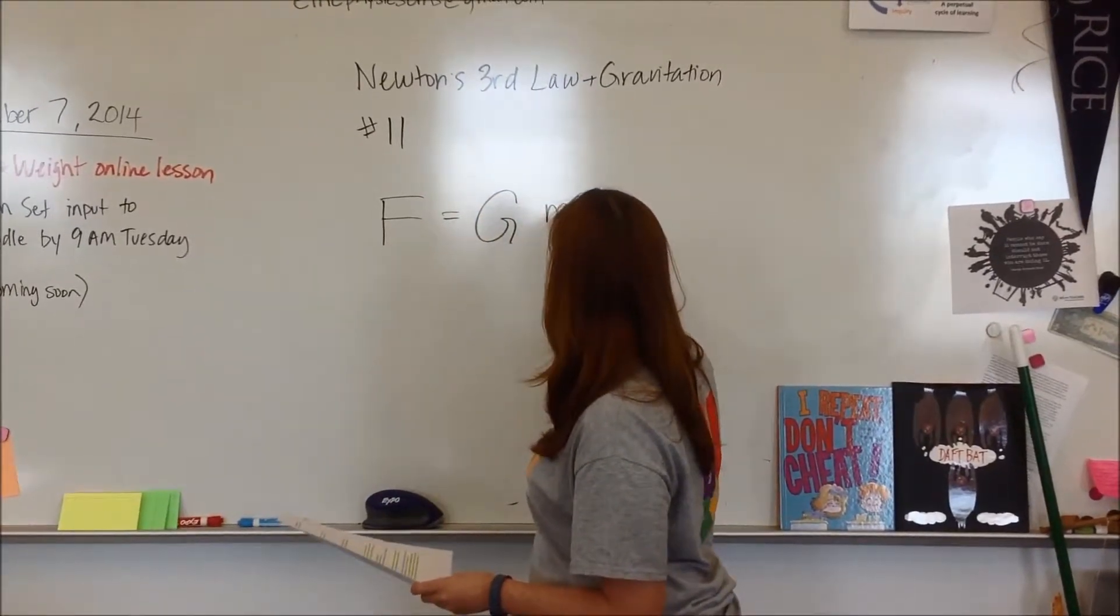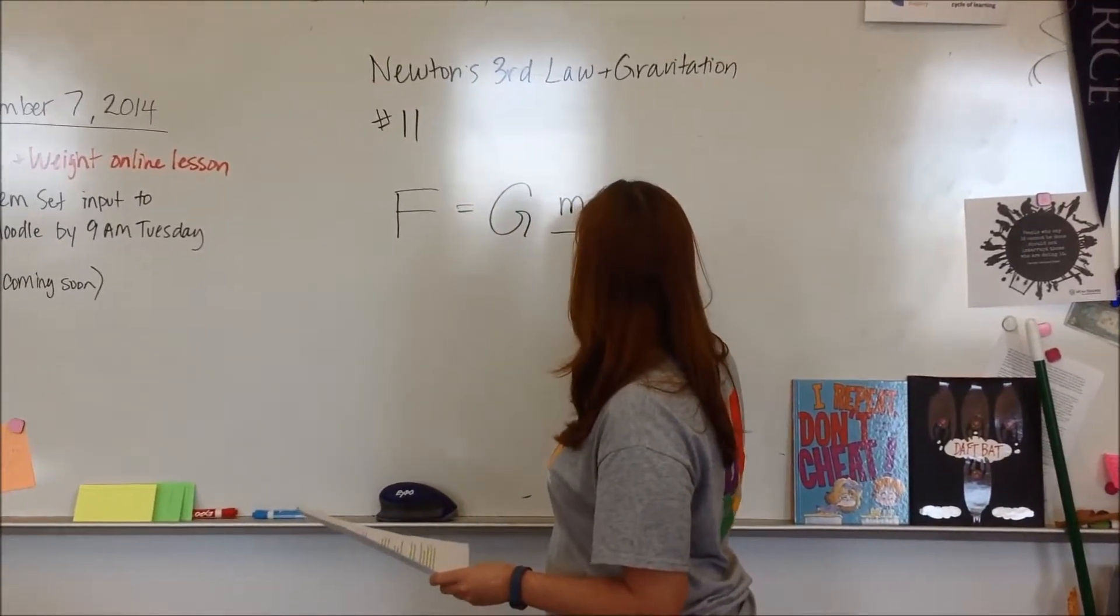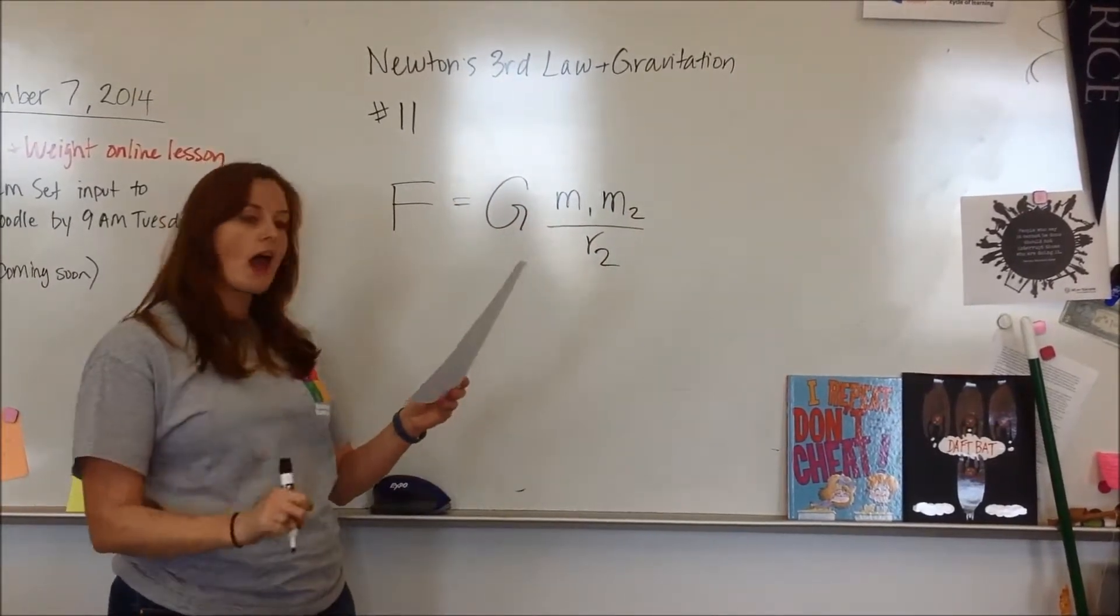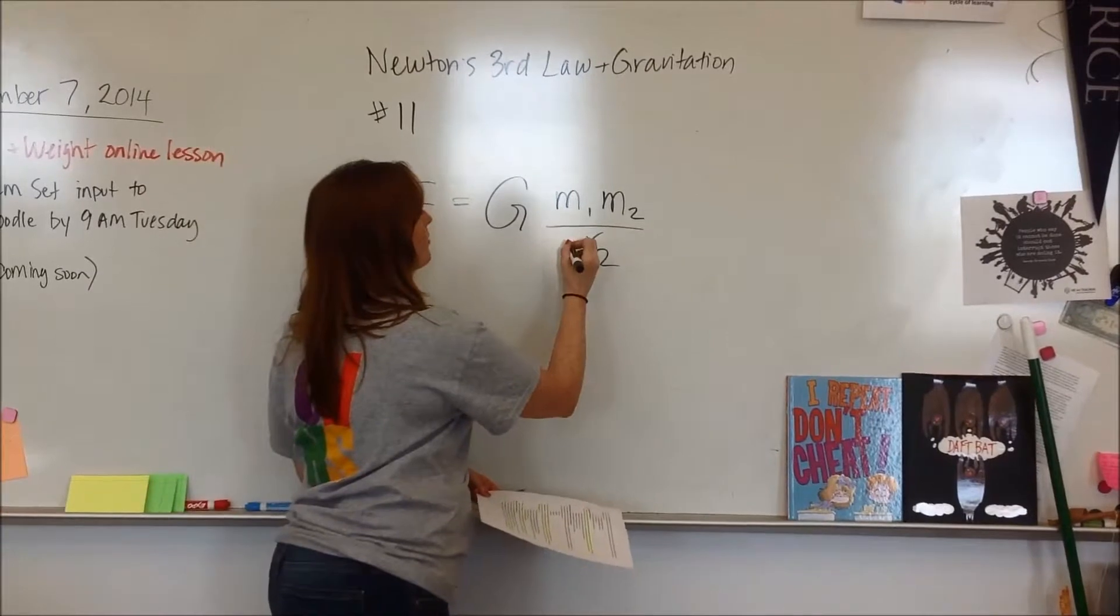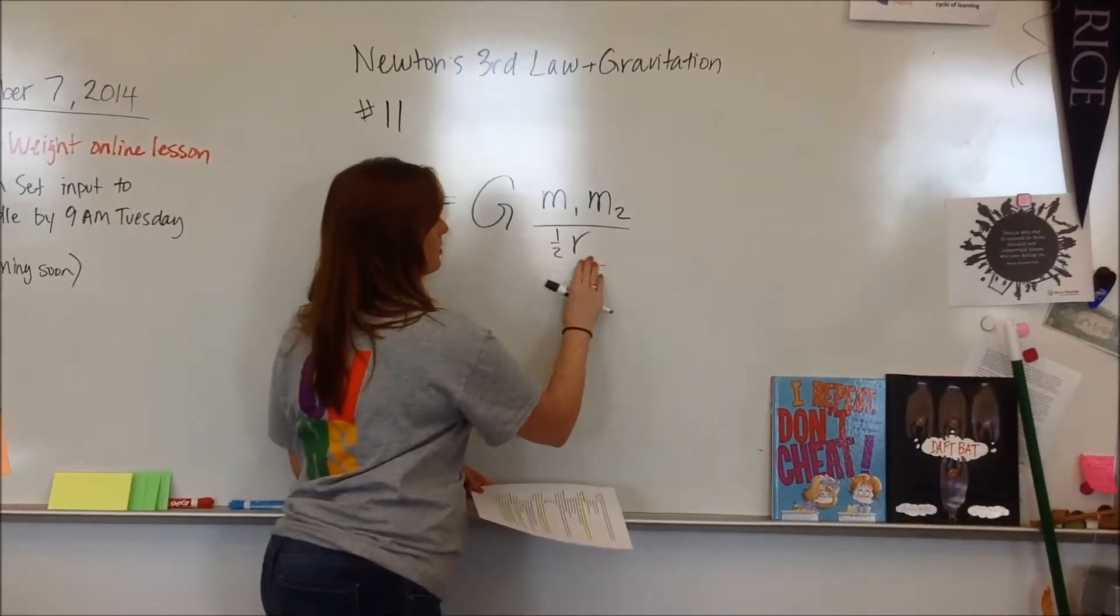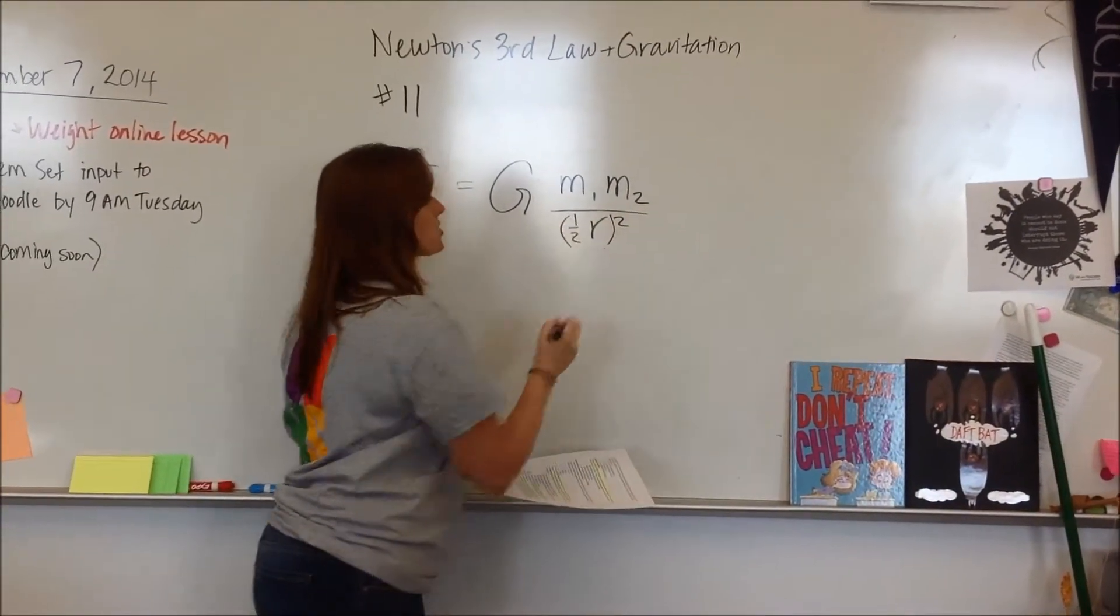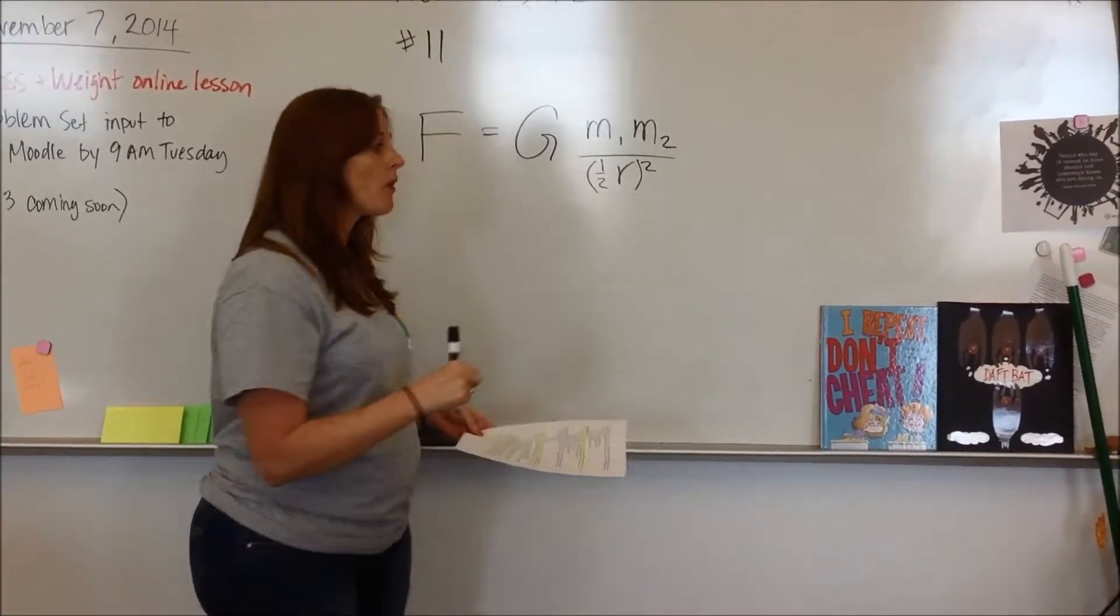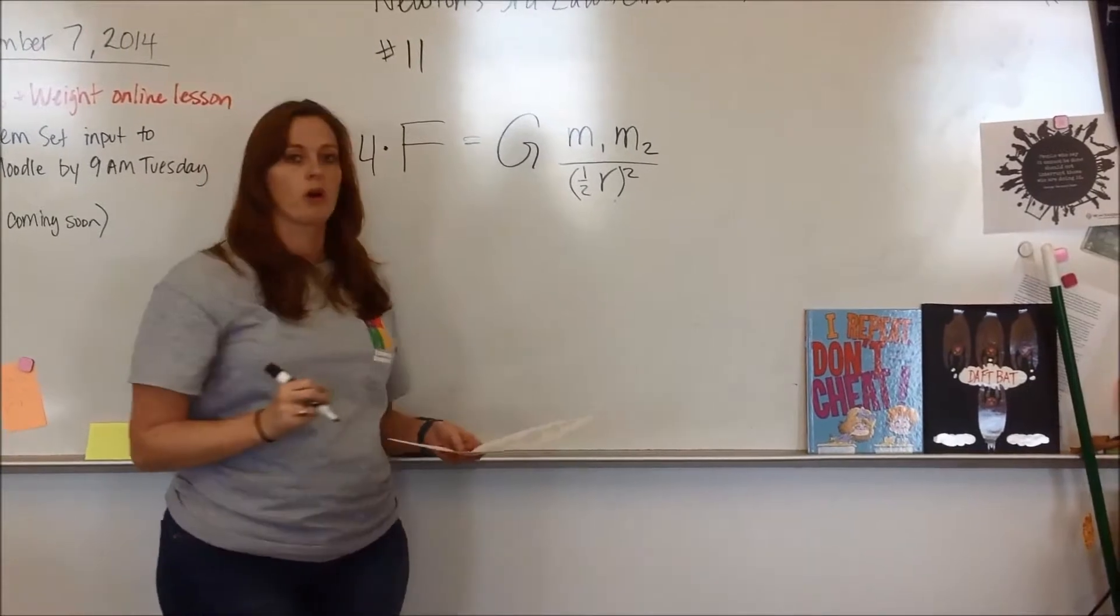We're going to start with the same equation. If I have halved my separation, that means this is now one-half R squared, which means I've divided by one-fourth. Dividing by one-fourth is the same as multiplying by four.